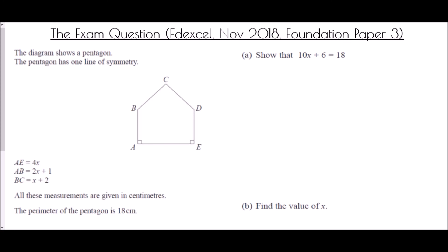We need to link all the information together. The pentagon is not regular — it just has five sides. It has one line of symmetry, which goes straight down the centre. Because of that symmetry, BC and CD are exactly the same, and AB and DE are the same. So AE = 4x across the bottom, AB = 2x + 1, and therefore DE = 2x + 1 as well.